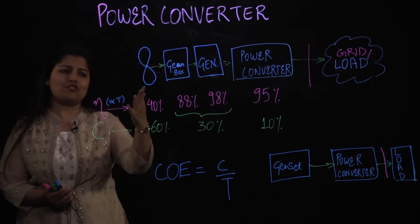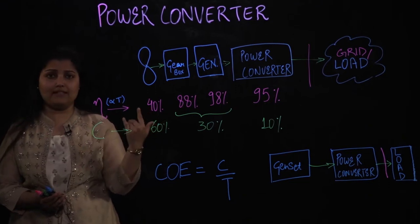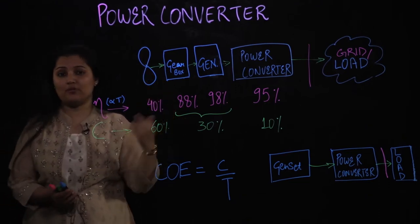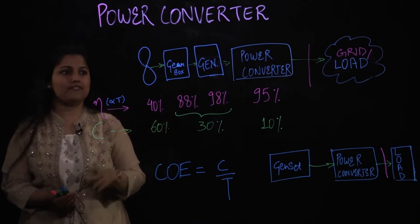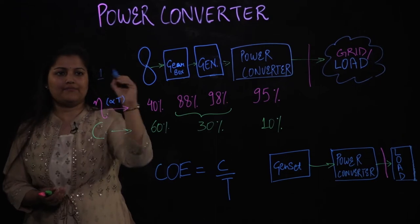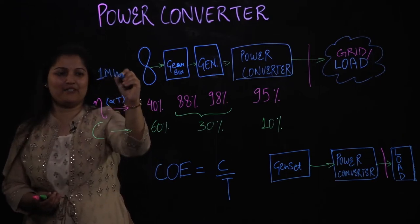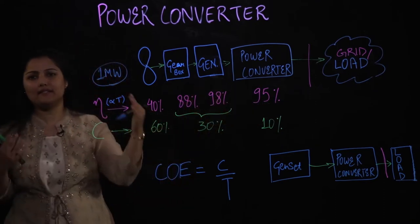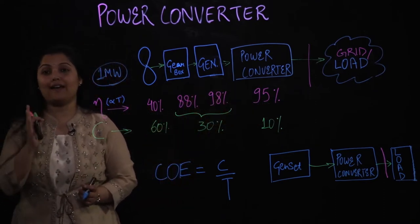Typical efficiencies for your wind turbine is 40%, gearbox would be 88%, generator would be 98%, and power converter would typically be 95% — because we are talking about something like 1 megawatt of power. In that range your typical power converter efficiencies are in the upwards of 95%, because you don't want to lose that higher power.